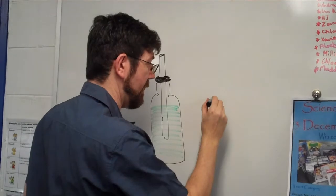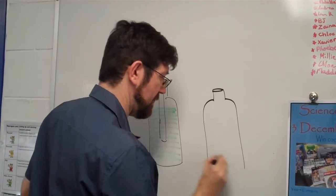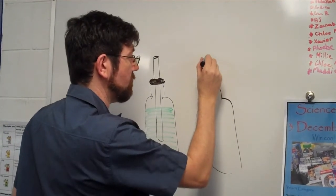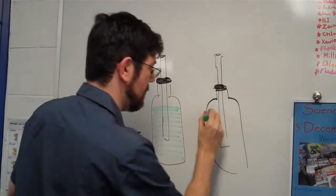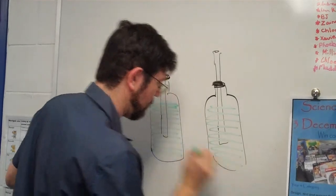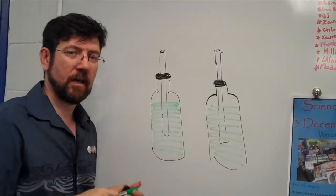Alright, then you've got your other bottle without a container around it. And the same sort of deal. So straw, plug, liquid inside, like that. So one bottle with the container, one bottle without the container.